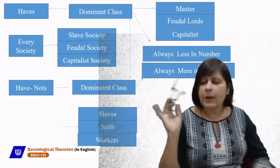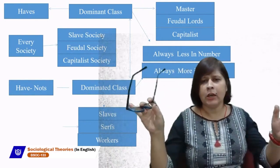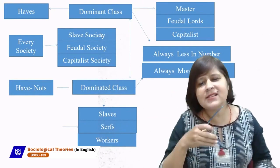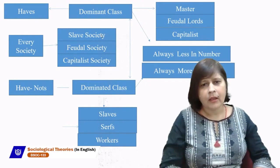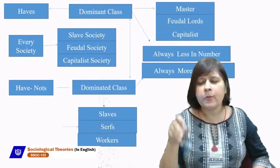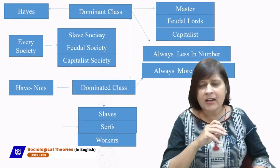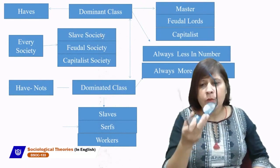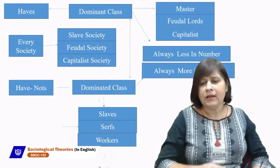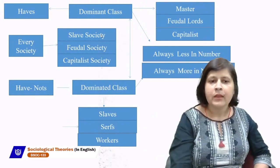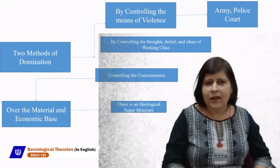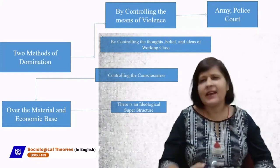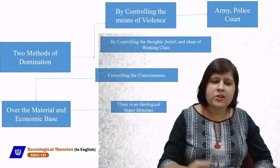In every society, whether slave, feudal, or capitalistic, there were two antagonistic classes, and their material needs are opposite to each other. Dominant class is always less in number and dominated class is always more in number. It is surprising how a dominant class that is less in number can rule the dominated class which is more in number. Karl Marx explained this — according to him, there are two methods of domination.